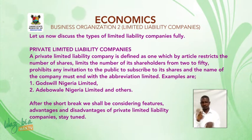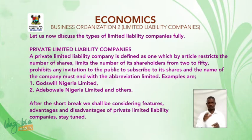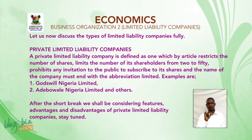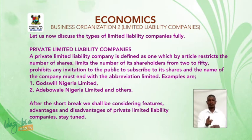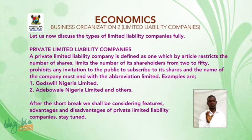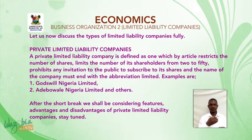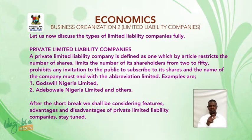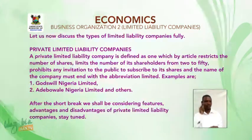Let us now discuss the types of limited liability companies fully. 1. Private limited liability companies: A private limited liability company is defined as one which by its articles restricts the transfer of shares, limits the number of its shareholders from 2 to 50, prohibits any invitation to the public to subscribe to its shares, and the name of the company must end with the abbreviation 'Limited.' Examples are: 1. Coswell Nigeria Ltd. 2. Adebawale Nigeria Ltd.